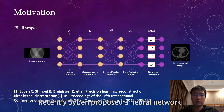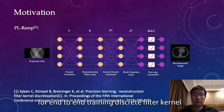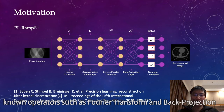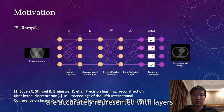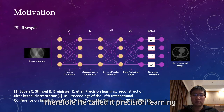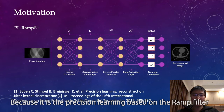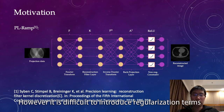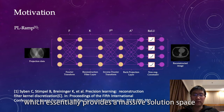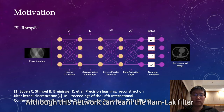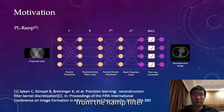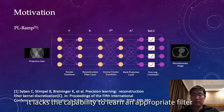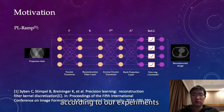Recently, Siben proposed a neural network for end-to-end training of a discrete filter kernel. In the network, neural operators such as full layer transform and back-projection are accurately represented with layers. Therefore, he called it process learning. Because it is process learning based on the ramp filter, we denoted it as PL-Ramp. However, it is difficult to introduce a regularization term in this method, which essentially provides a massive solution space. Although this network can learn a ramp-like filter from the ramp filter, it lacks the capability to learn an appropriate filter for noisy projection data according to our experiments.